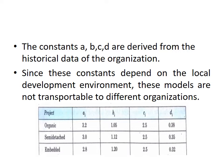The constants A, B, C, D are derived from the historical data of the organization. Since these constants depend on the local development environment, the models are not directly transportable to different organizations. As a reference, if the project is categorized as organic, the A, B, C, D values are 3.2, 1.05, 2.5, and 0.38. For an embedded project, the values are 2.8, 1.20, 2.5, and 0.32.